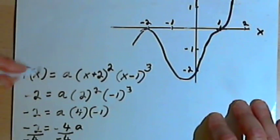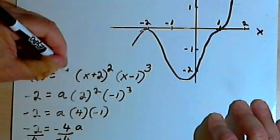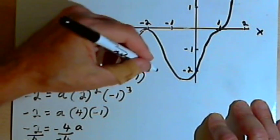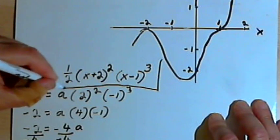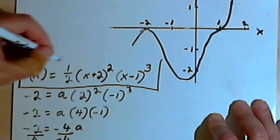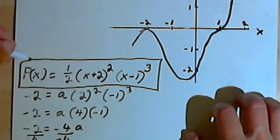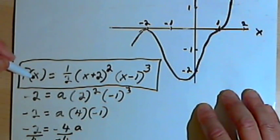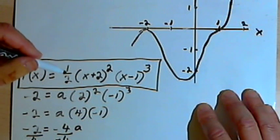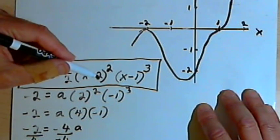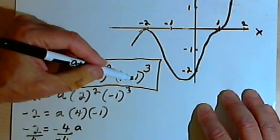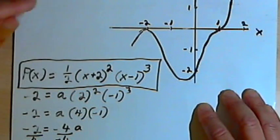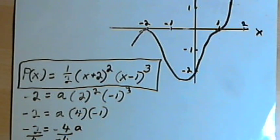So the constant over here, the a, is 1 half. So the equation for this polynomial function is p of x equals 1 half times x plus 2 squared times x minus 1 to the third power. Okay? And that's about it. Take care. I'll see you next time.